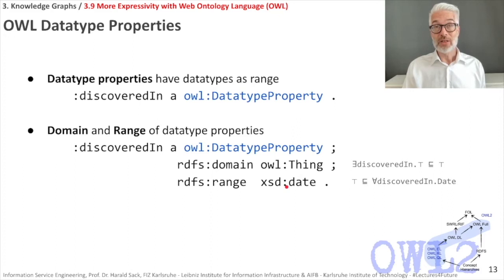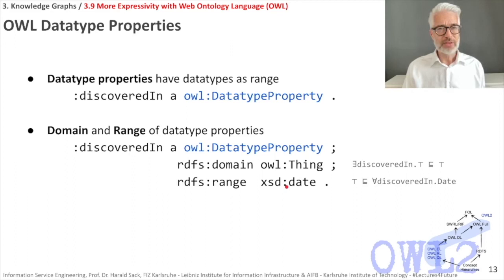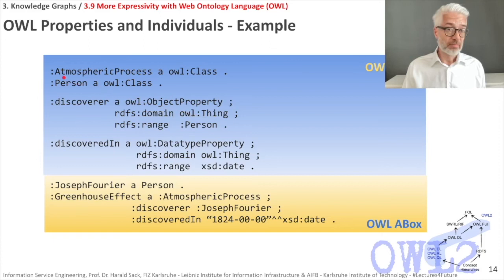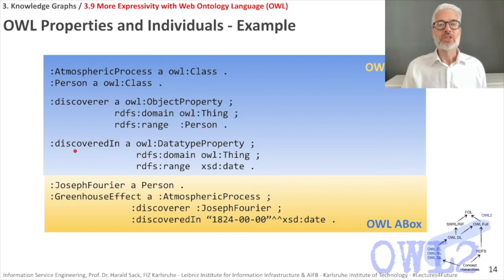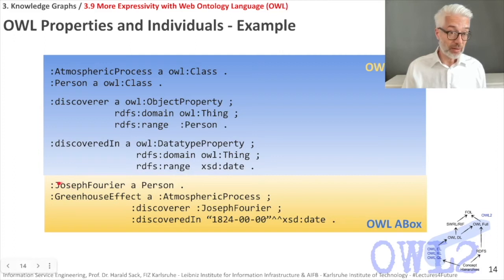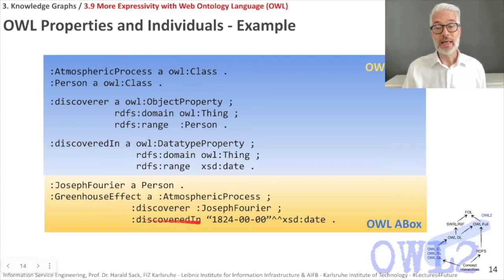Now we have all basic building blocks and can create our first small knowledge base. We define 'AtmosphericProcess' and 'Person' as OWL classes, with properties 'discoverer' (object property, domain OWL Thing, range Person) and 'discoveredIn' (datatype property, domain OWL Thing, range xsd:date). Then in the A-box: Joseph Fourier is a Person, the greenhouse effect is an AtmosphericProcess, its discoverer was Joseph Fourier, and it was discovered in 1824.